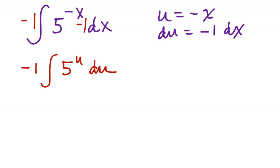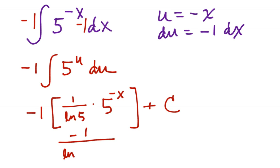And when I integrate, it's negative 1 times 1 over ln 5 times 5 to the u, which is 5 to the negative x, plus a constant. And so we just want to clean that up with the negative, you can certainly do negative 1 all over ln 5 times 5 to the x in the denominator, plus a constant.